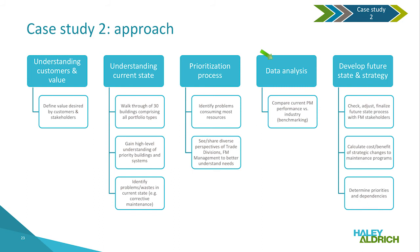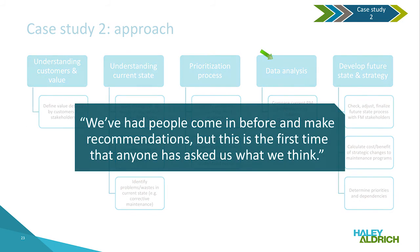We helped assess the current state of the maintenance work practices and systems. This involved shadowing to observe the processes and behaviors from the work order coming in to the satisfactory completion of the work order. This was a very important part of the approach to get a deeper understanding of what obstacles are getting in the way of effective maintenance, as well as generating ideas from the people doing the work for improvement. As one of the staff said, 'We've had people come in before and make recommendations, but this is the first time that anyone has asked us what we think.' This approach was effective because it let them see and be part of the solution to tackle the challenge that they were facing.